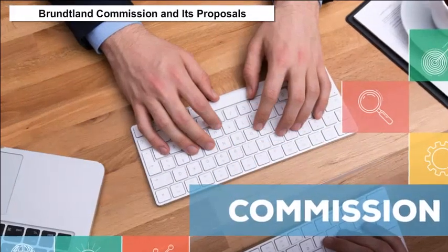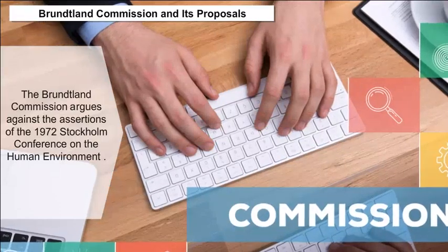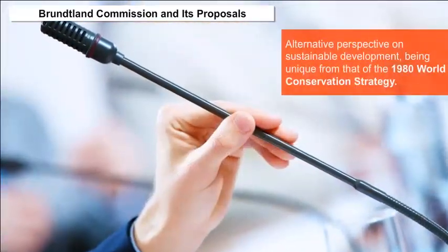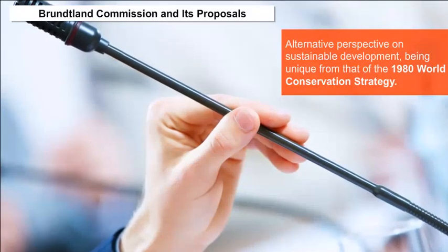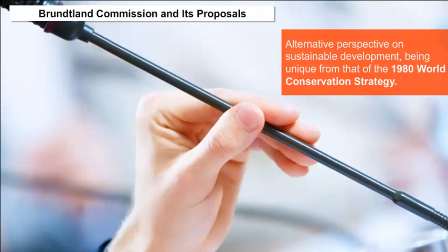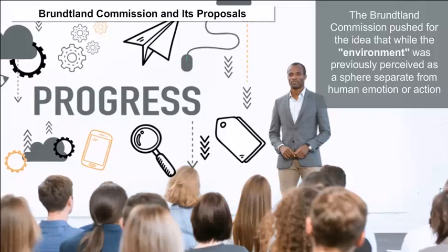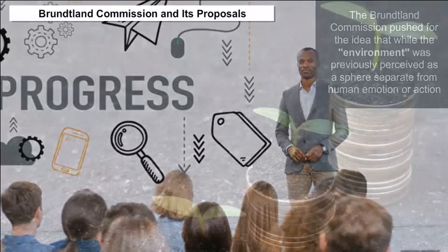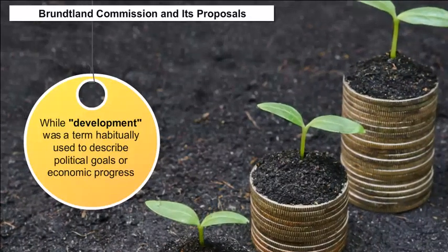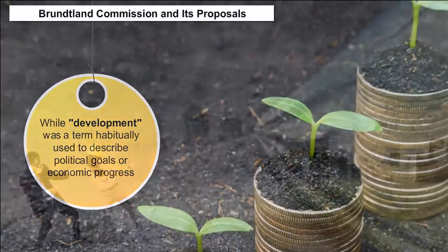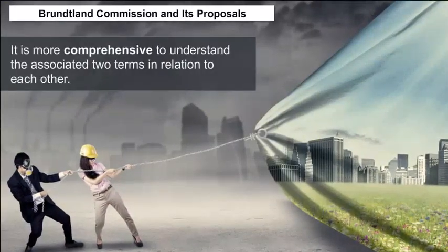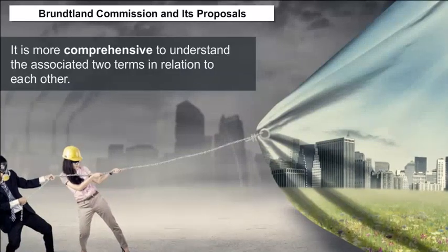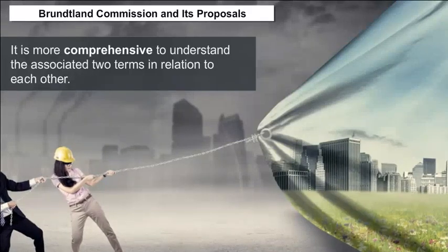Brundtland Commission and its Proposals: The Brundtland Commission argues against the assertions of the 1972 Stockholm Conference on the Human Environment and provides an alternative perspective on sustainable development distinct from the 1980 World Conservation Strategy. The Commission pushed for the idea that while the environment was previously perceived as separate from human action, and development was used to describe political or economic progress, it is more comprehensive to understand the two terms in relation to each other — they cannot and should not be distinguished as separate entities.